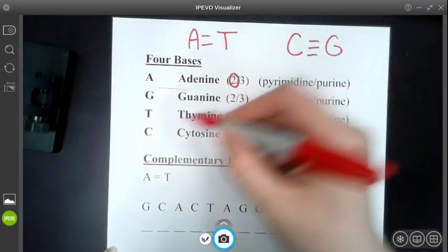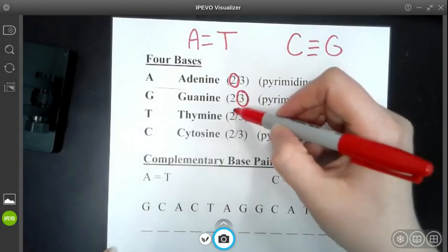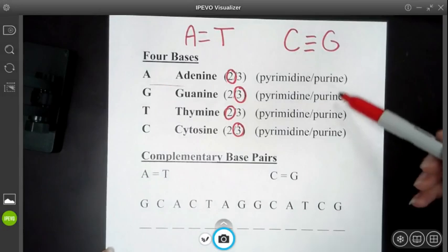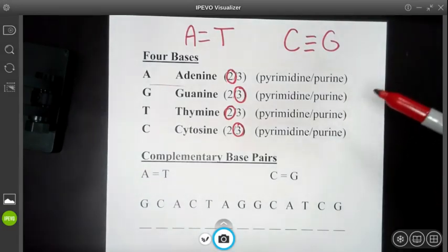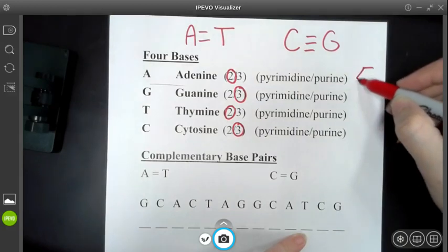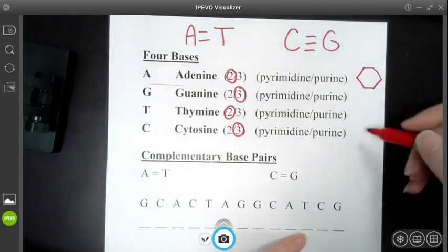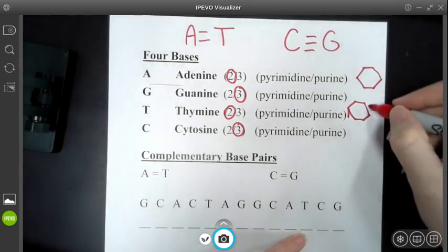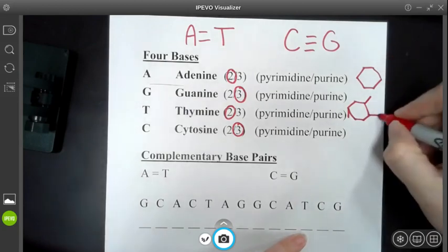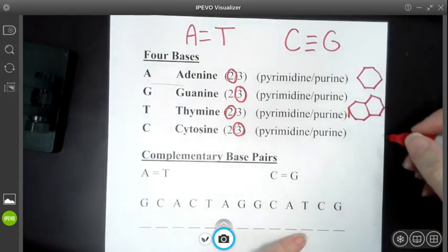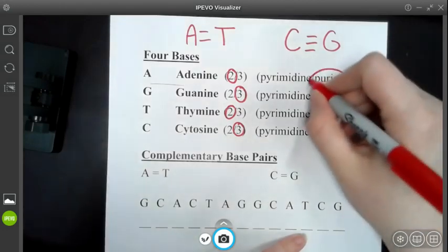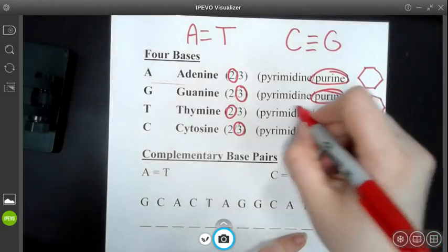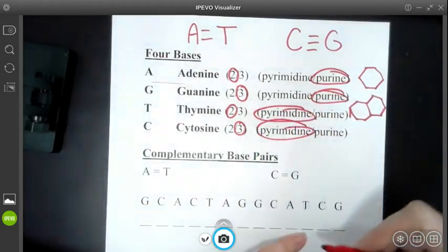So adenine, I'm going to have two, guanine is three bonds, thymine is two, and cytosine is three. Now over here, we have pyrimidine and purine. This has to do with the structure of the nucleic acids. So a pyrimidine is actually going to be a single ring like this. And a purine is a nucleic acid that has a double ring structure. So adenine and guanine are both purines, while thymine and cytosine are both pyrimidines.